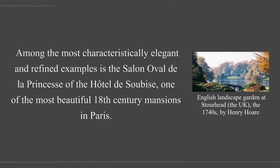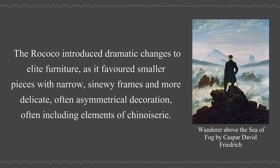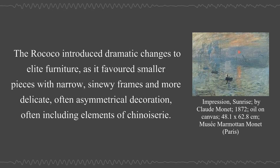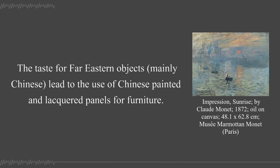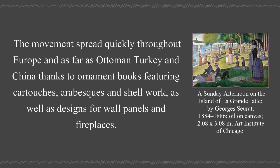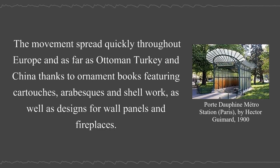In Paris, its popularity coincided with the emergence of the salon as a new type of social gathering, the venues for which were often decorated in a Rococo style. Among the most characteristically elegant and refined examples is the Salon Oval de la Princesse of the Hôtel de Soubise, one of the most beautiful 18th century mansions in Paris. The Rococo introduced dramatic changes to elite furniture, favoring smaller pieces with narrow sinewy frames and more delicate, often asymmetrical decoration, often including elements of chinoiserie.